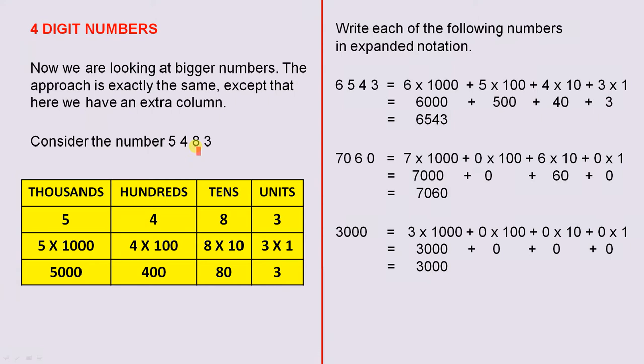So 5,483 is 5 times 1,000 plus 4 times 100 plus 8 times 10 plus 3 times 1. 5,000 plus 400 plus 80 plus 3 is 5,483. Write each of the following numbers in expanded notation.